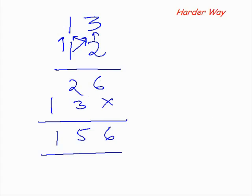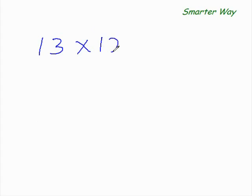I know you must be getting impatient. You must be saying, cut this hard way — I'm already sick and tired of it, show me the smarter way. So here is your smarter way. The smarter way of multiplying 13 with 12 is the same base method of multiplication that we learnt in the last class. And yes, you guessed it right, the base here is 10.